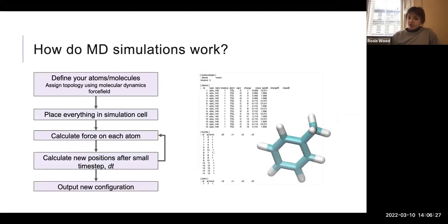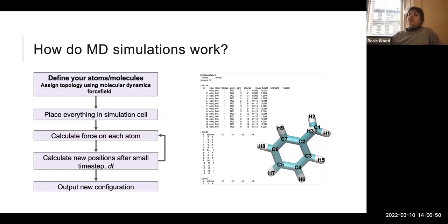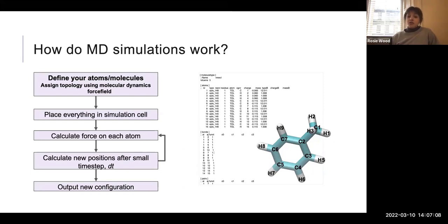So how does the simulation work? The first thing we do is define the atoms or molecules that we want to simulate — I'm showing here a toluene molecule. For each atom, I'll assign a mass, a charge, and an atom type. I'll then look at all the bonds and assign bond lengths and bond angles, along with lots of other properties. All of this goes into a file which we call the topology file.